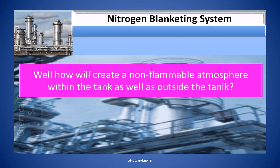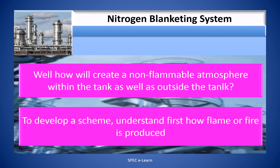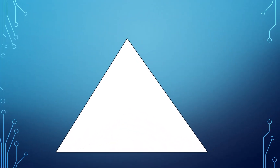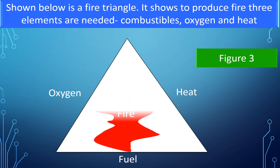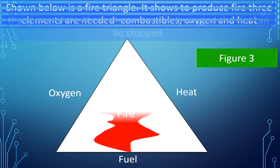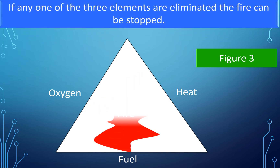How can we create a non-flammable atmosphere within and outside the tank? To develop a scheme, we must first understand how flame or fire is produced. Shown below is a fire triangle. To produce fire, three elements are needed: combustibles, oxygen, and heat. If any one of the three elements is eliminated, the fire can be stopped.